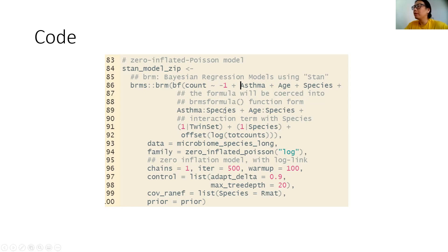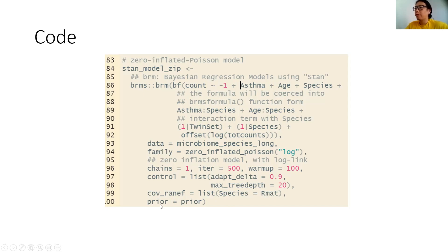The function I want to mention is brm, the function for the brms package, which is the Bayesian regression model used for Stan. The brms package can fit almost all the GLM and LM functions from R. We also added the covariance structure with the Pearson correlation. For the prior, I just set it with an uninformative prior, but the earlier research used a normal distribution and I didn't find any evidence to support that, so I changed that part.